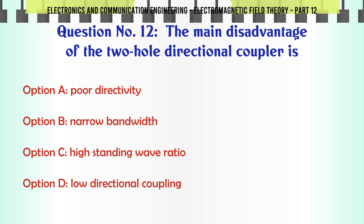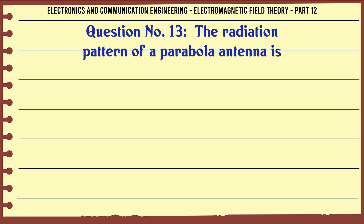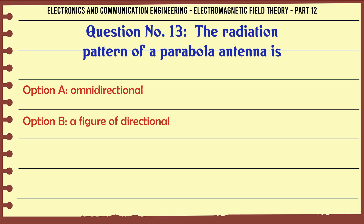The main disadvantage of the two-hole directional coupler is: A. Poor directivity, B. Narrow bandwidth, C. High standing wave ratio, D. Low directional coupling. The correct answer is Narrow bandwidth.